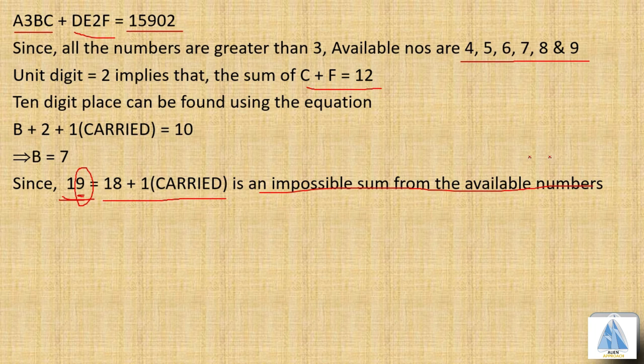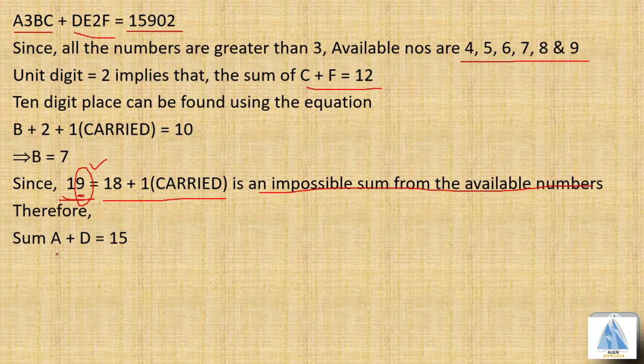So 9 must be a single digit number; it should not be 9 from 19. Therefore, the sum of A + D, the thousand digit sum, must be determined.